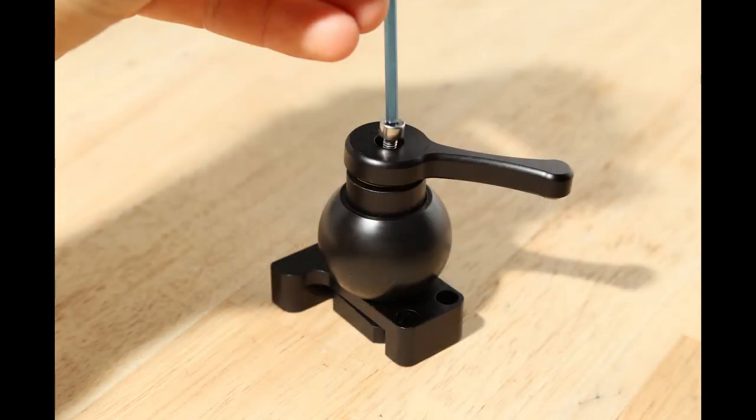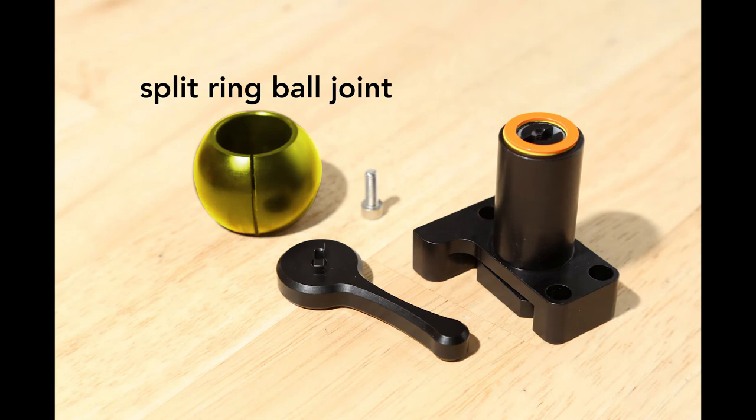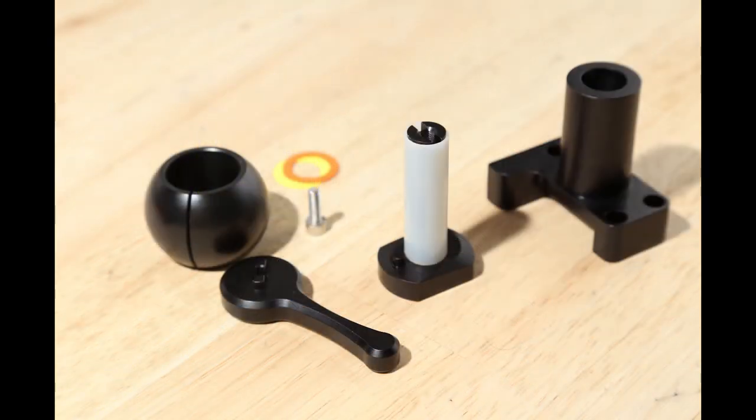Unscrew the bolt at the top of the lever and you can remove the handle and slide the ball joint off. Remove the plastic spacers and slide out the inner cylinder. It's surrounded by a plastic sleeve to reduce friction.